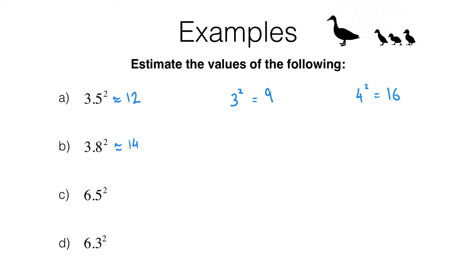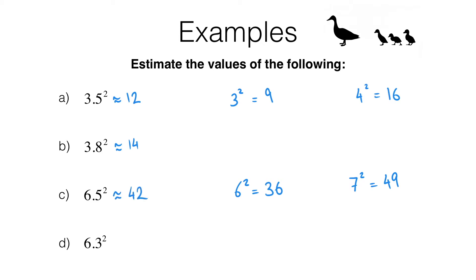Moving on to part c, we've got 6.5 squared. We look at 6 squared which is 36, and 7 squared which is 49. 6.5 squared is going to be approximately halfway between 36 and 49. The difference between these two numbers is 13, and half of 13 is 6.5, so adding that gives 42.5. I'm going to say our answer is approximately 42 — though 43 is fine too, since it's only a rough estimate.